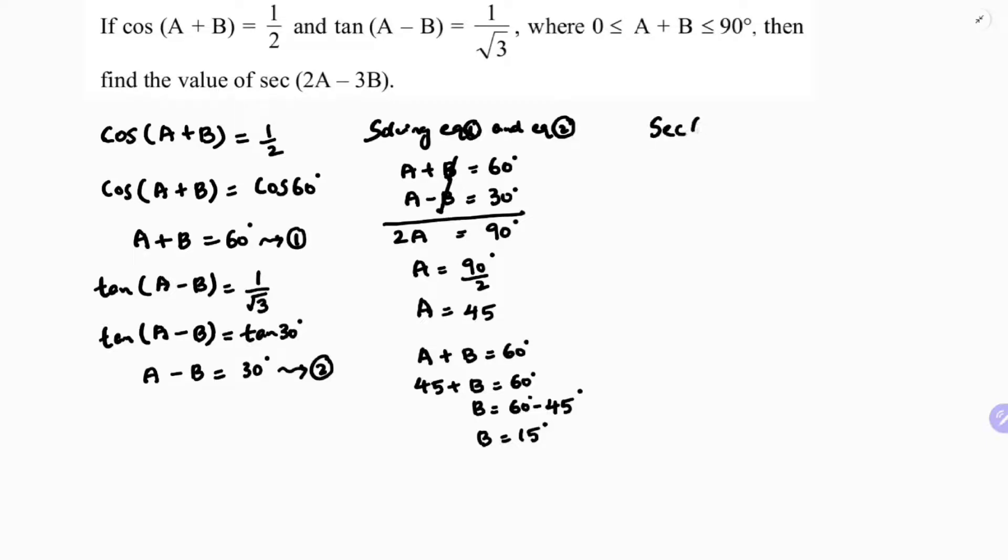So now I need to find sec(2A - 3B). Secant of 2 into 45 minus 3 into 15. So secant of 90 minus 45, you will get here secant of 45.